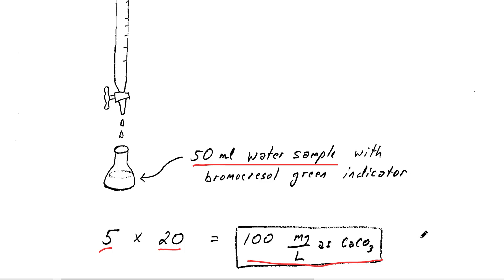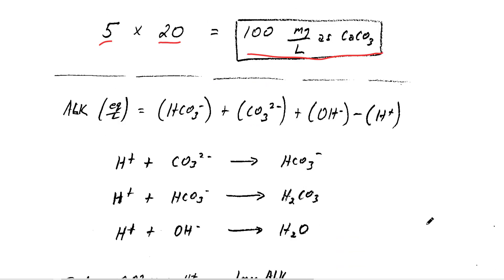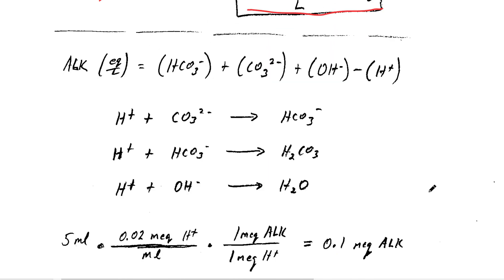But if you want to understand what's happening, let's dive in a little bit further. The alkalinity in equivalents per liter is the equivalents of bicarbonate plus the equivalents of carbonate plus the equivalents of hydroxide minus the equivalents of the hydrogen ion.